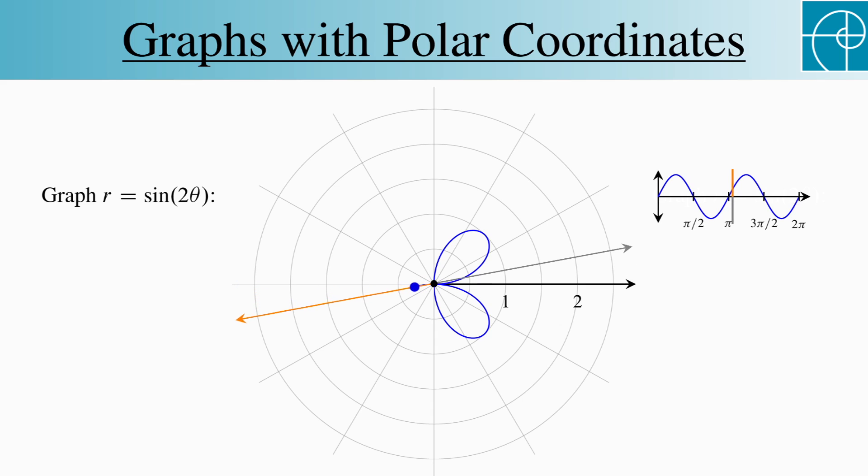Between pi and 3pi over 2, the function goes from 0 to 1 to 0. So we trace a third petal. And last, as you might guess, we trace a fourth petal from 3pi over 2 to 2pi.